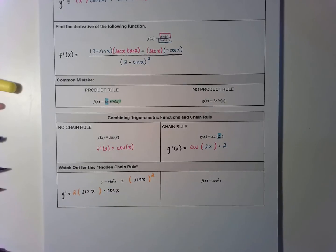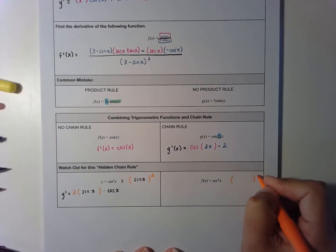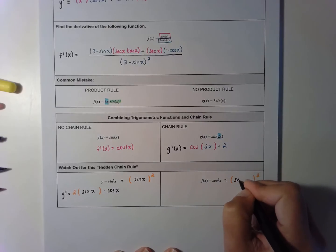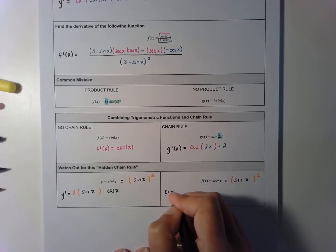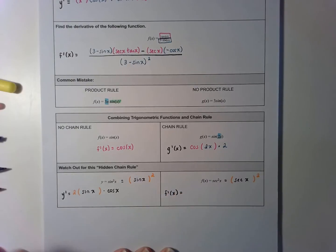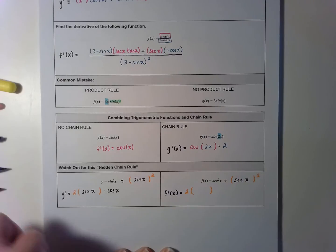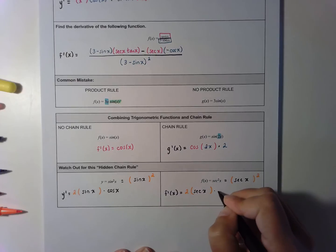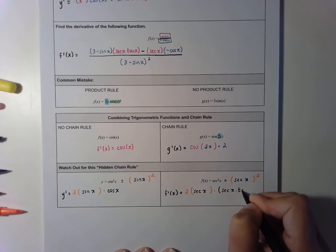Another example of hidden chain rule: secant squared of x really means (secant of x) squared. To take the derivative I use chain rule — the derivative of the outside gives 2 times something to the first power, leave the inside alone, times the derivative of the inside. The derivative of secant is secant times tangent, so the result is 2 secant of x times secant of x times tangent of x.